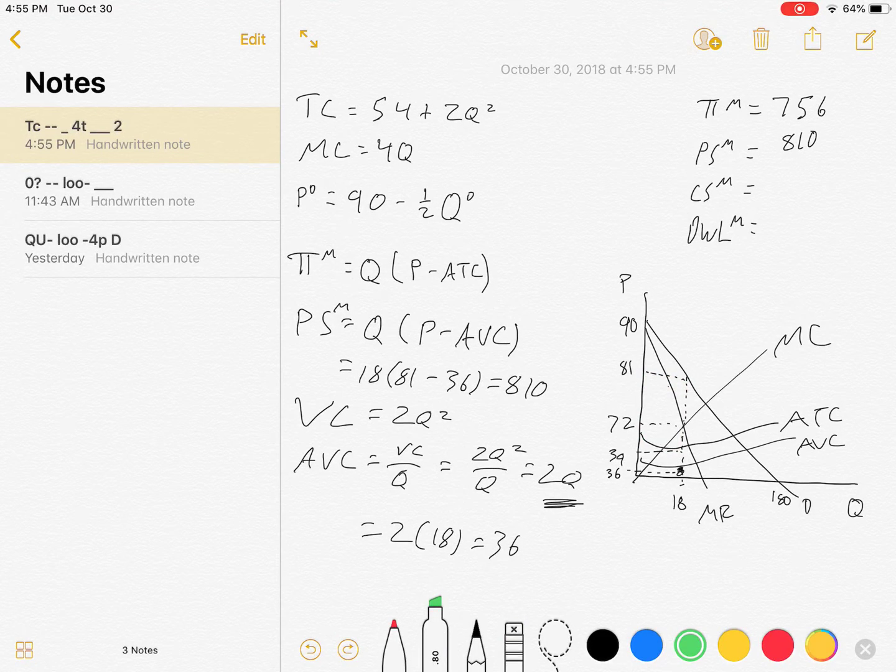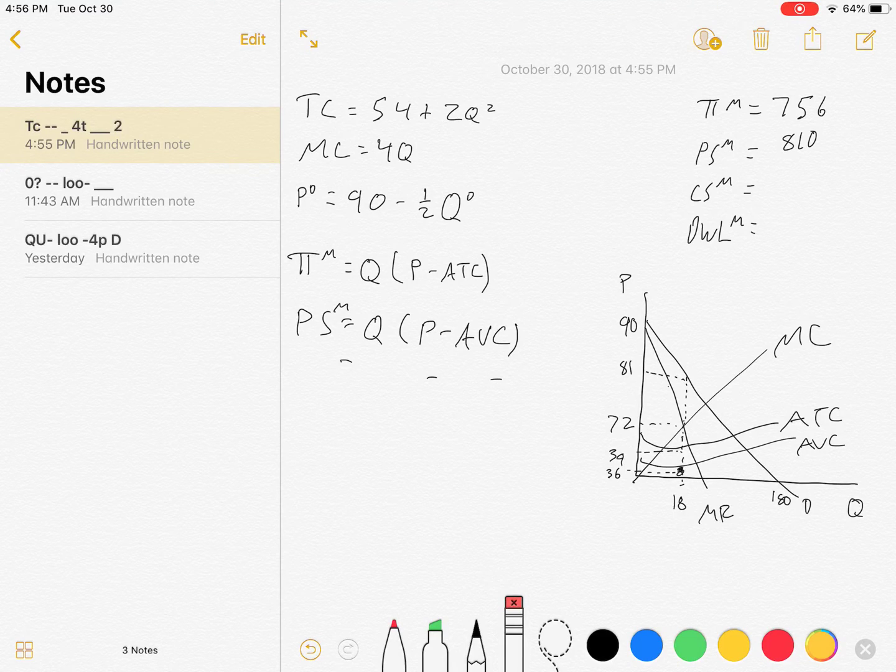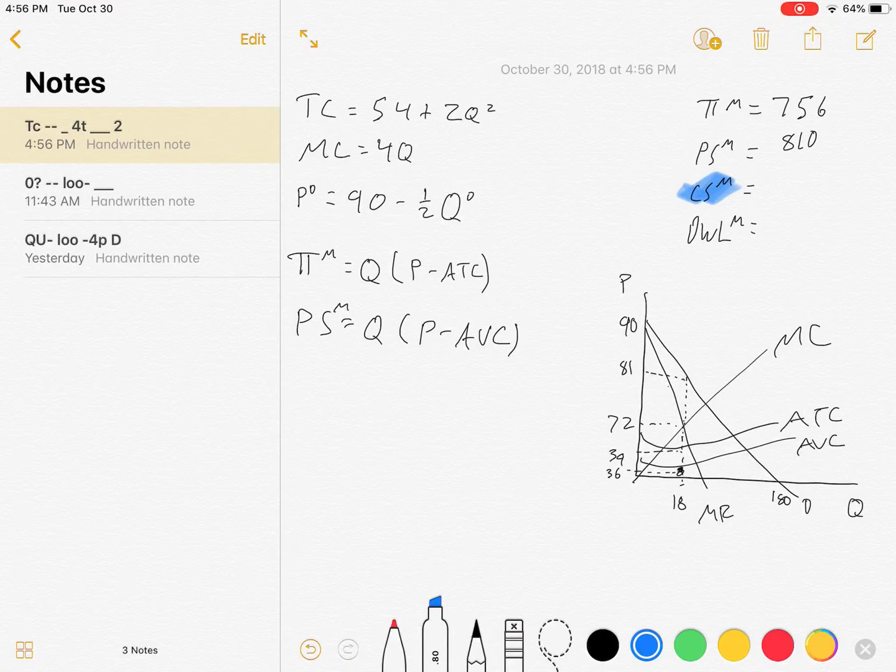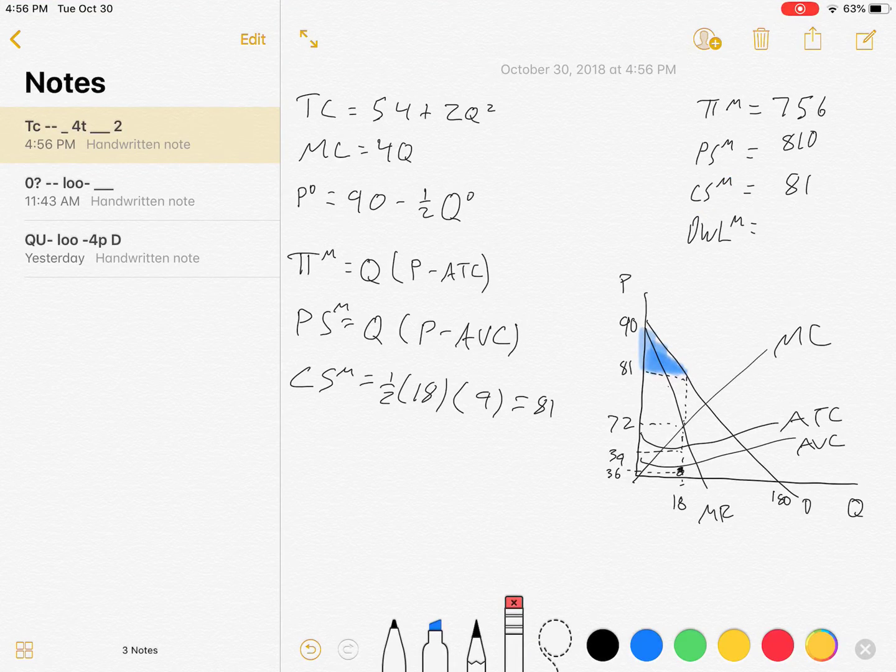Next we want consumer surplus, and consumer surplus will be the same as it's been in a lot of our other stuff. Consumer surplus in monopoly is below the demand curve above the price, so CS = 1/2 times the base of that triangle (18 units) times the height of that triangle (9 units). That comes to be just 81.